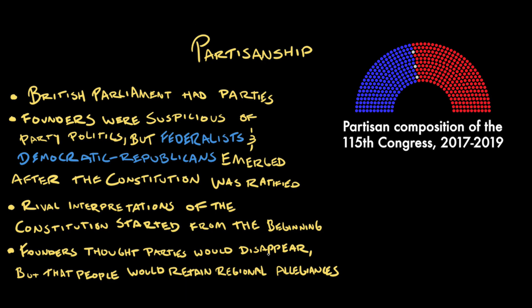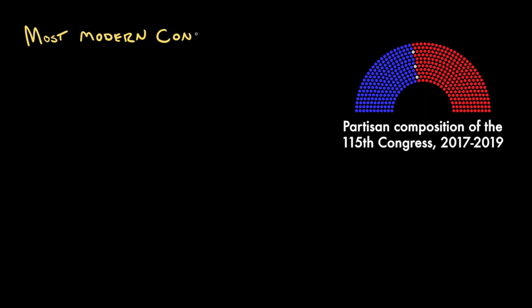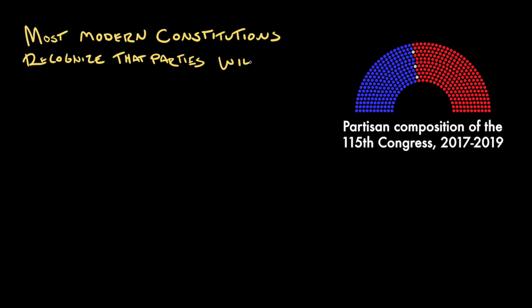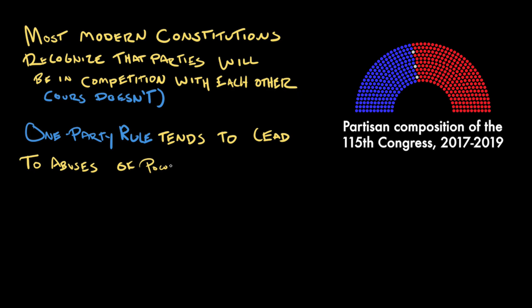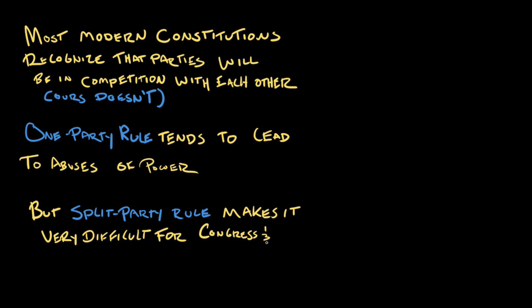Most modern constitutions recognize that there will be two parties in competition with one another, and that part of the constitution's job is to regulate that competition. Maybe the founders would have been less confident that Congress would always stand up for its prerogatives against the president when the president and Congress are of the same party. When they are the same party, Congress is often inclined to overlook various presidential abuses. And the whole point of needing both branches to act becomes a problem if one side is antagonistic to the other.